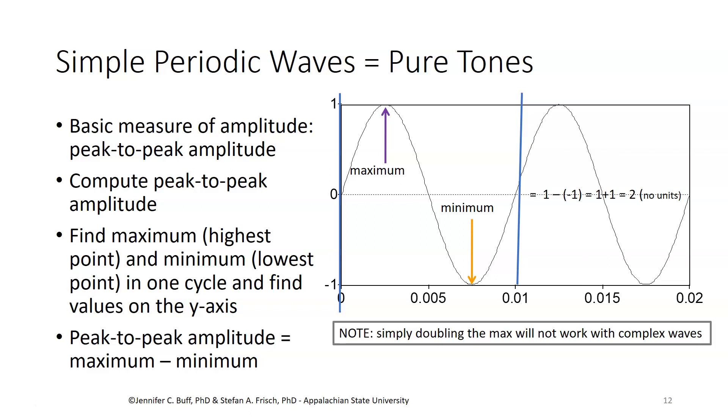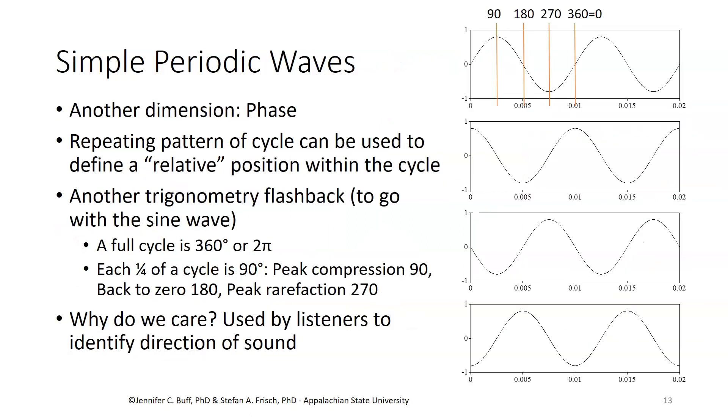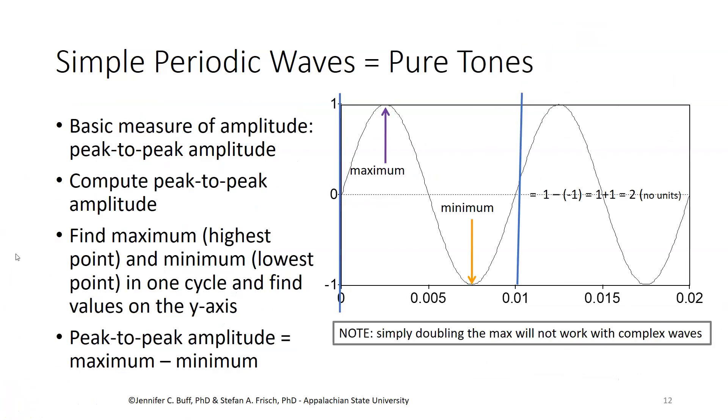In the case of this simple tone where the maximum is one and the minimum is minus one, subtracting off a minus one results in adding one and gives you a total of two. So our peak to peak amplitude here would be two. You may have noticed that for this simple wave you can take the maximum value and double it and also get two. That will be true for all simple periodic waves, but it won't be true once we do this with complex waves.